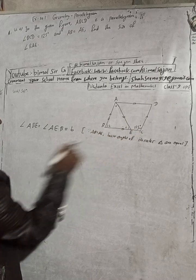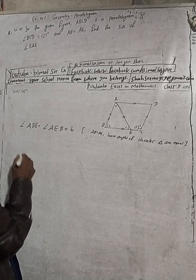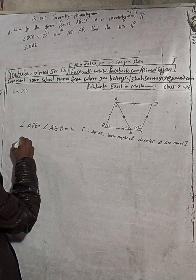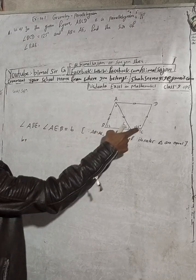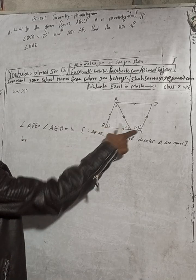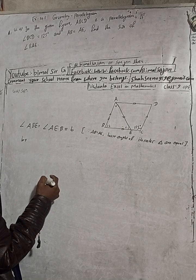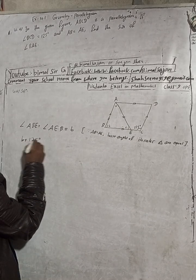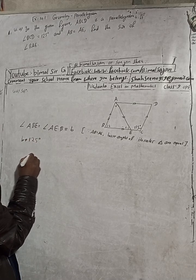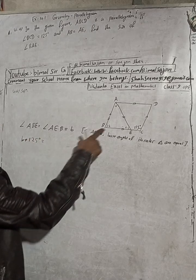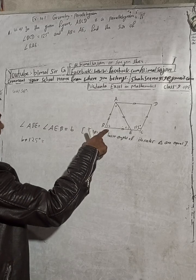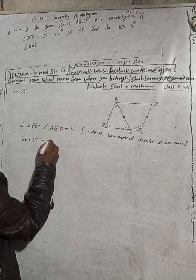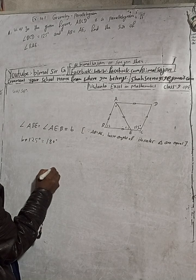Now, this angle plus this angle — B plus this B. What angle is the other one? One hundred twenty-five degrees. So B plus 125 degrees.